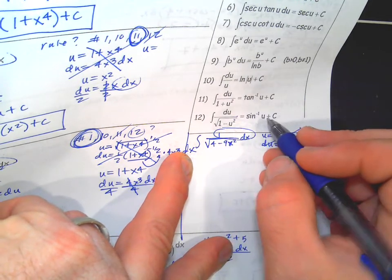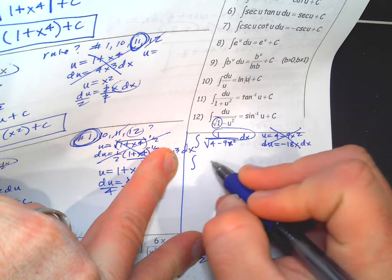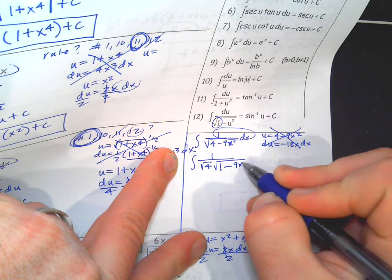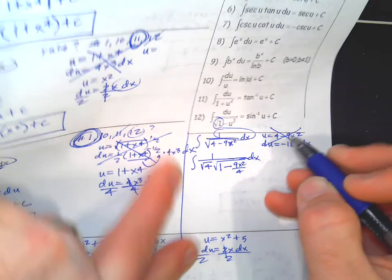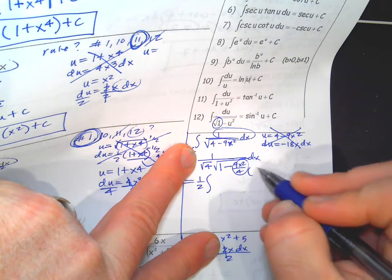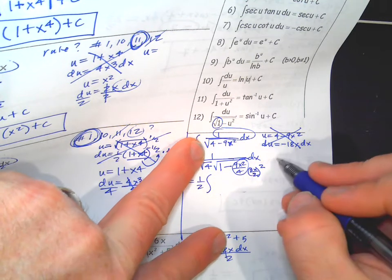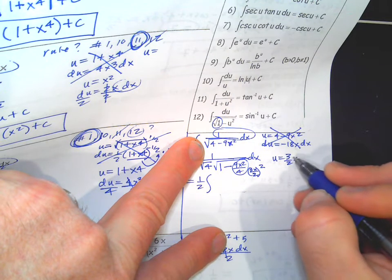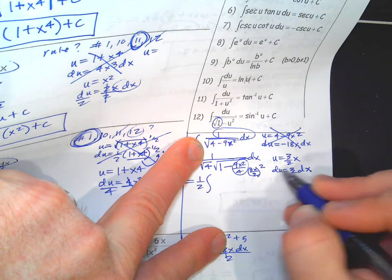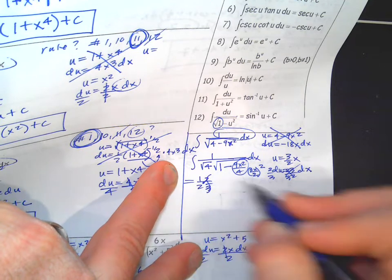Next example: u equals x² plus 5, du equals 2x dx. There's a 6 out front — just put the 6 out front and deal with the one-half separately, giving 3 ∫ du/u. That's 3 ln|x² + 5| plus C. But recognize the inside is always positive, so the absolute values aren't needed — it's just 3 ln(x² + 5) plus C.